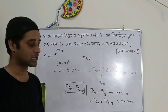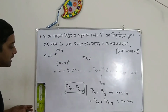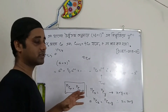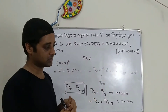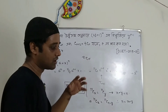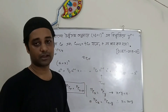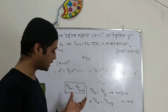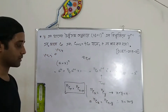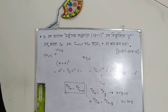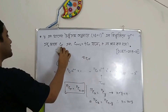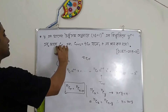So this is nCr equal to nC(n minus r). We will prove that nCr is equal to n factorial divided by r factorial and (n minus r) factorial. This is the basic method and the concept of nCr.